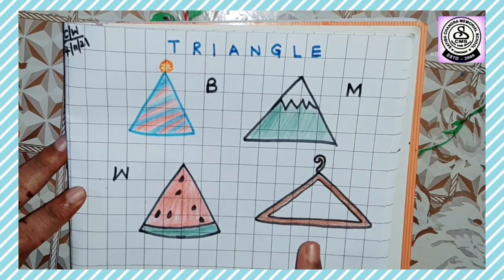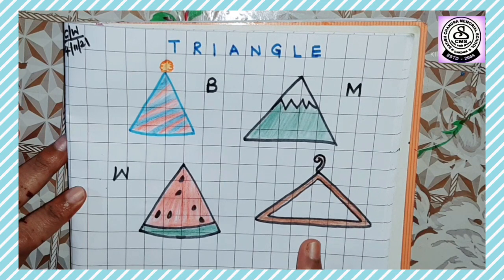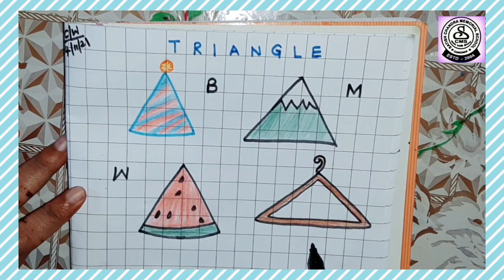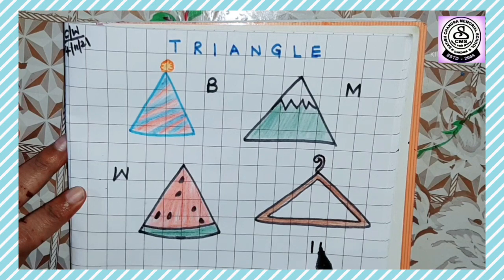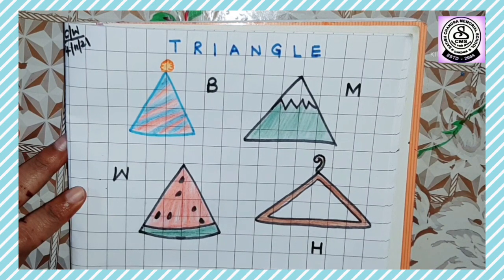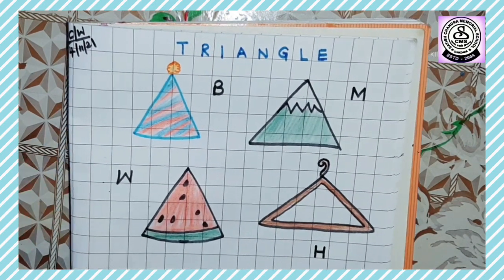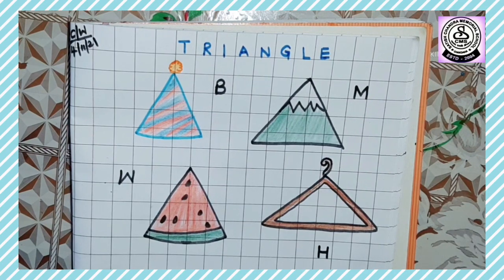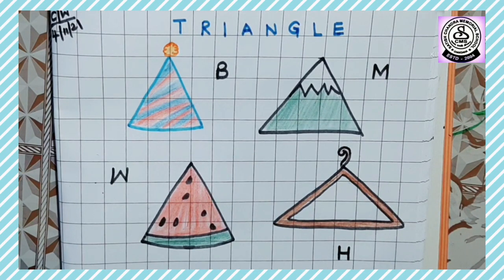Our fourth triangle shape object is hanger. And what is the phonics sound of hanger? Very good! Ha, ha, hanger. So kids, I have drawn only four triangle shape objects. You can draw as many objects as you like. So kids, you can also draw different objects with triangle shape. Yes, try at home different objects with triangle shape.